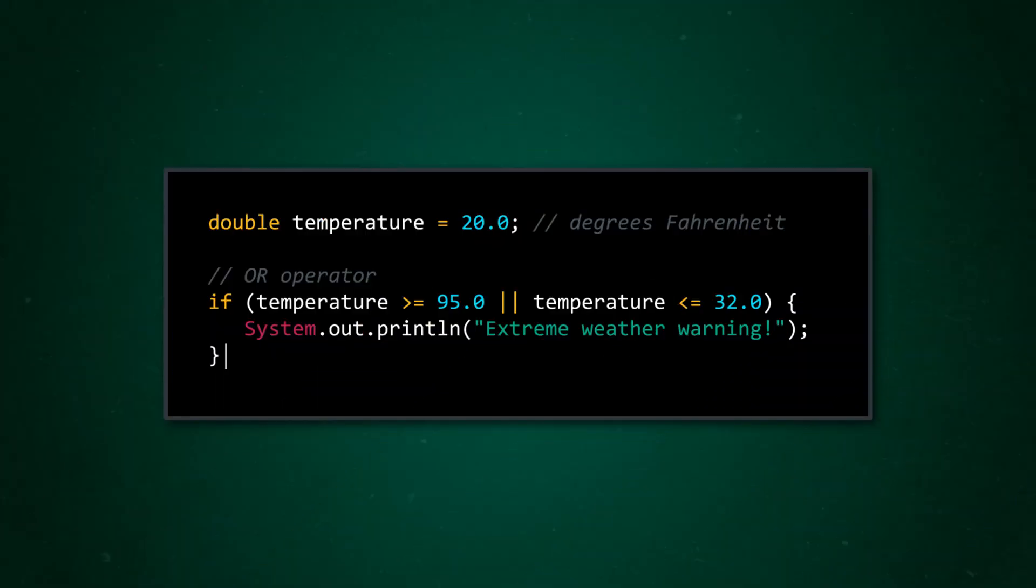But what if we only needed one of these conditions to be true? That's where the logical OR comes in. When we set up our weather warnings earlier, we had two concerns: extreme heat and extreme cold. But we could also check for extreme weather in general. This code will tell us the weather is extreme if it meets our criteria. If it's either super hot or super cold, we'll print out a warning. But we don't need both to be true like with the logical AND. But we do have to be careful with these compound expressions since there are a few common mistakes.